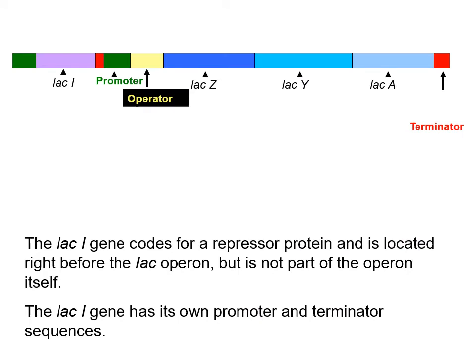Imagine we have our operon here. The genes necessary for the breakdown of lactose are present, and they have this promoter region. There's also a gene upstream — the lacI gene. Repressors are proteins too, and they have genes that encode for them. The lacI gene encodes for the repressor that represses the transcription of the enzymes necessary to break down lactose. As long as lactose isn't present, that's a good thing.